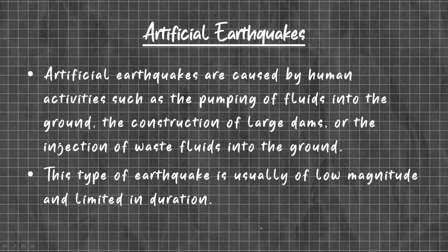Artificial earthquakes are caused by human activities such as pumping of fluids into the ground, construction of large dams, or injection of waste fluids into the ground. This type of earthquake is usually of low magnitude and limited in duration.